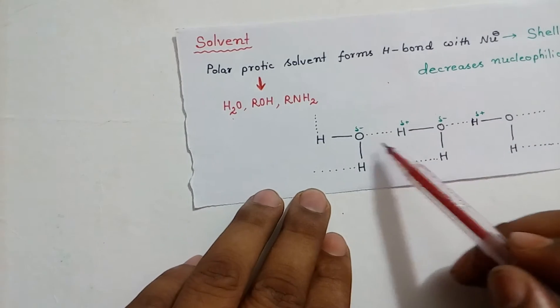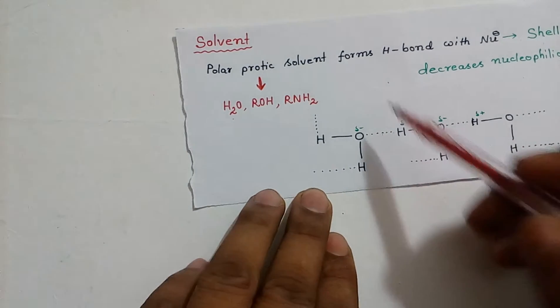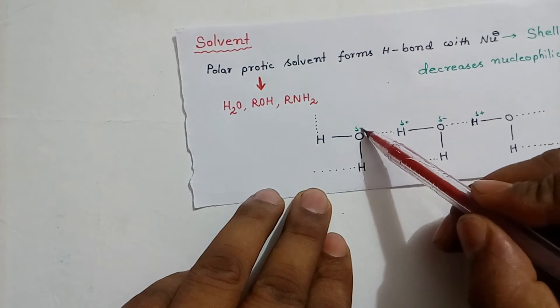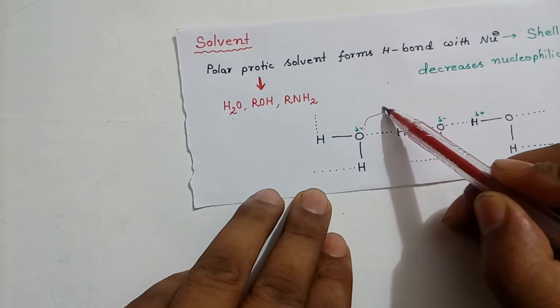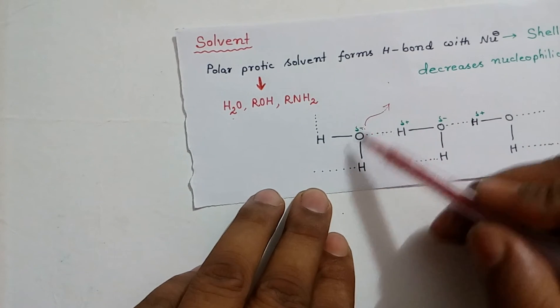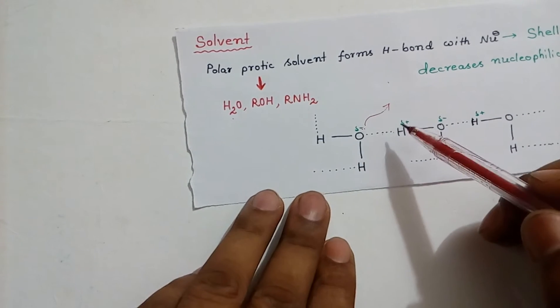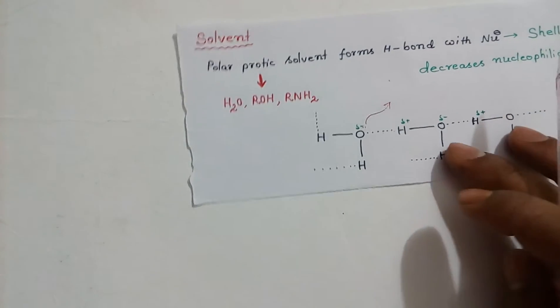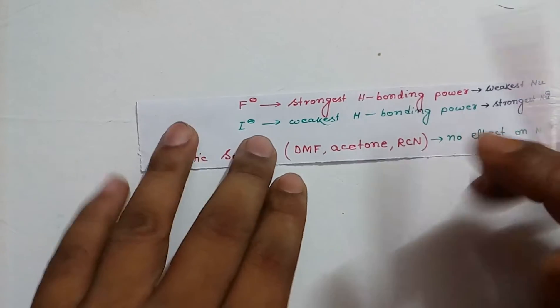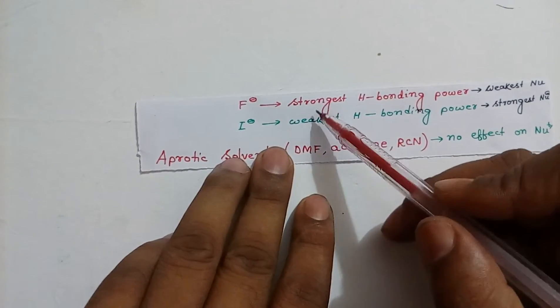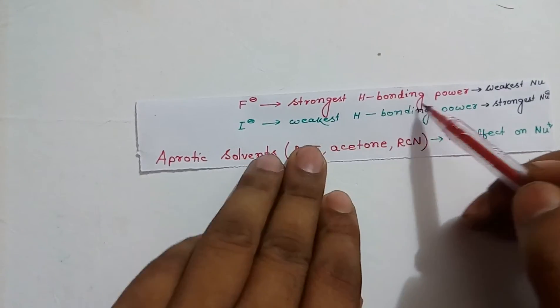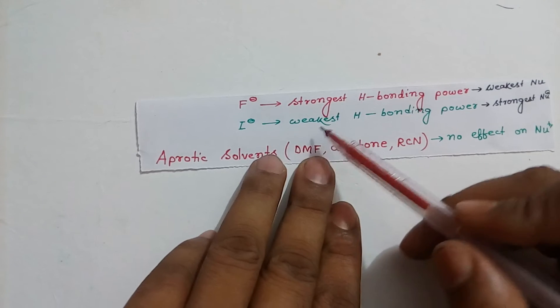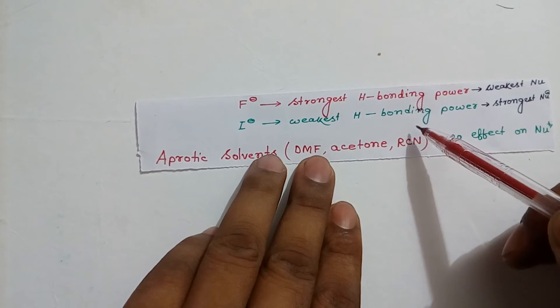So, they form hydrogen bond. And since they form hydrogen bond, it is having less power to donate its electron pair. Thus, it decreases its nucleophilicity. More the hydrogen bonding, lesser will be its nucleophilicity. F- is the strongest power to form hydrogen bonding. So, it is the weakest nucleophile. Iodide forms weakest hydrogen bonding. So, it is strongest nucleophile.